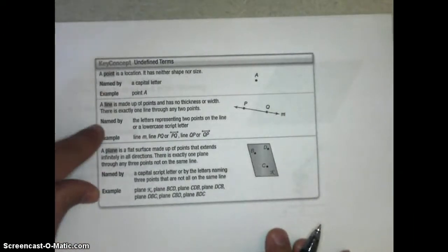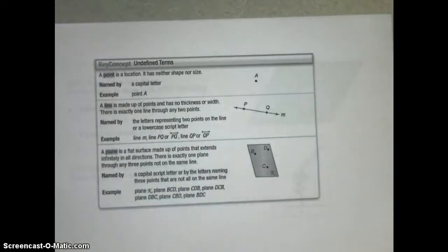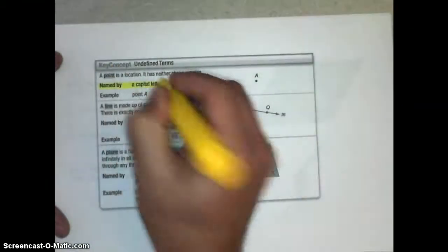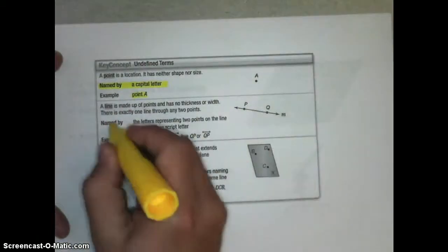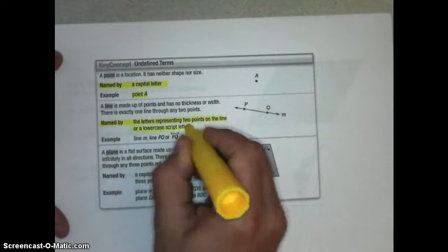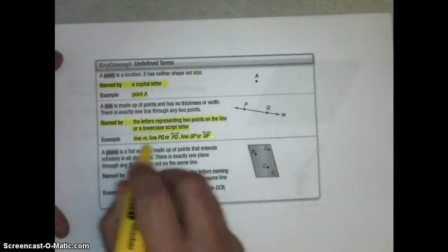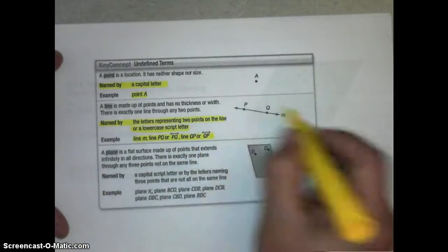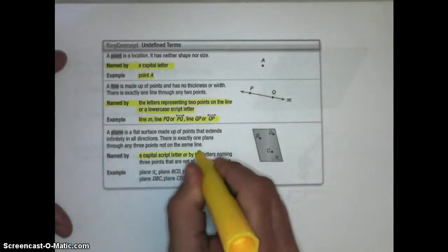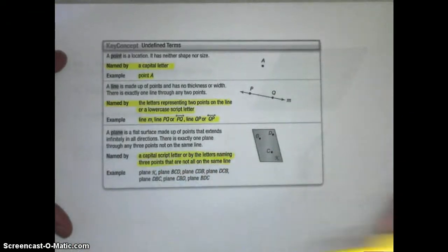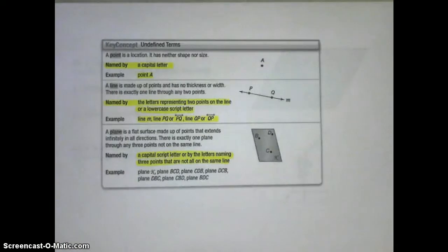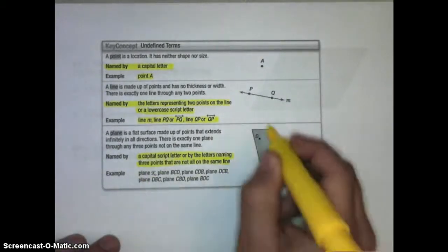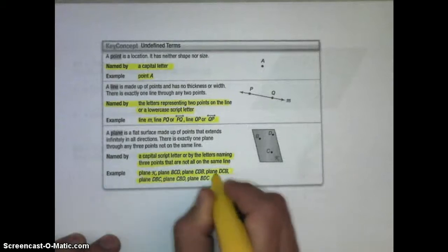Naming these is very important. We name a point by using a capital letter that goes with it, so we'd call it Point A. We name a line by using the letters representing two points on that line, or a lowercase script or cursive letter. So we could look at it like Line M, line PQ, or just put PQ with a line symbol above it. These all represent that same line. And then a plane is named by a capital script or cursive letter, and three points that are not on the same line. Points that are on the same line are called collinear, so three or more points that are not on the same line are called non-collinear.